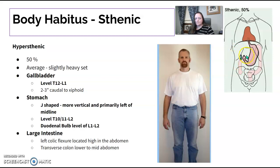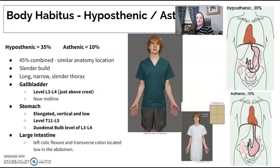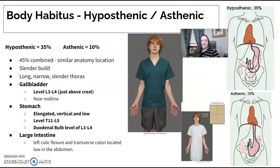Your sthenic patient is your average patient — more midline and middle of the road. Their gallbladder is at T12, L1. The duodenal bulb is around L1, L2. You can see how different the flexures look with the large intestine, and the left flexure is almost always higher than the right in this type of anatomy.